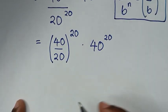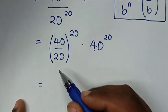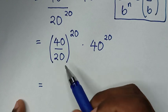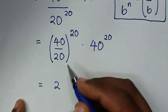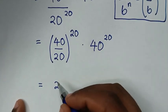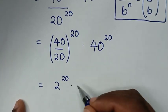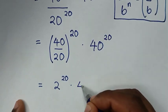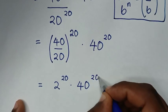Then in the next step it will be equal to — from 40 power of 20 over 20 power of 20, that gives us 2, so it is 2 power of 20, then times 40 power of 20.